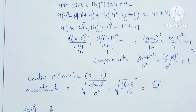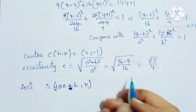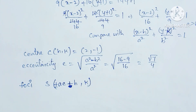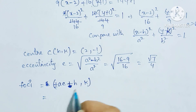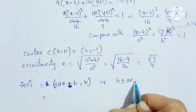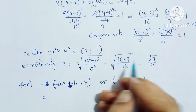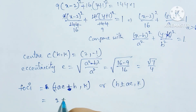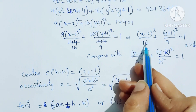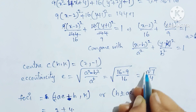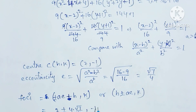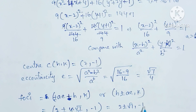Next, find the coordinates of the foci. The foci are S = (h + ae, k) and S' = (h - ae, k). Substituting h = 2, k = -1, and ae = √7, the foci are (2 + √7, -1) and (2 - √7, -1).